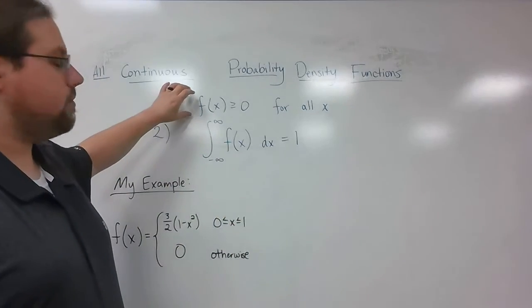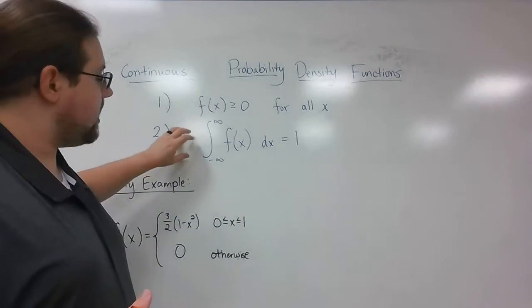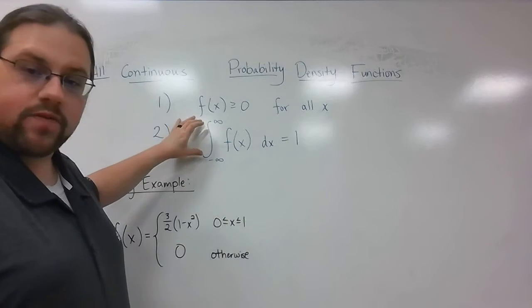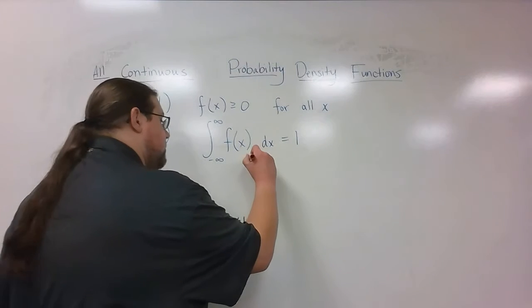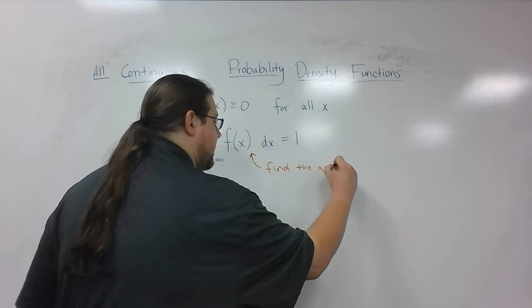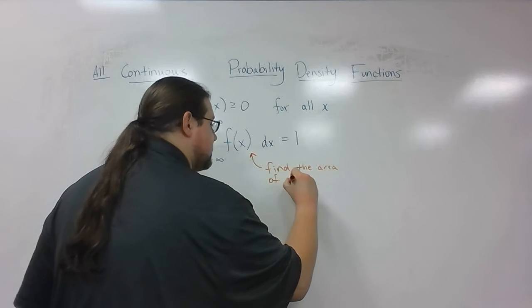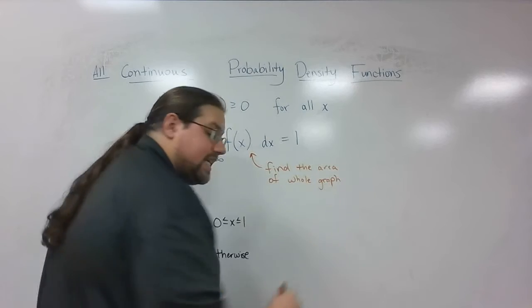Again, make sure that that's the case. No negative numbers as answers. Now the other thing you have to do is take the integral from negative infinity to positive infinity of f of x dx. That means find the total area for the entire graph. And what should happen is your answer should be one.